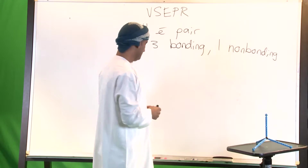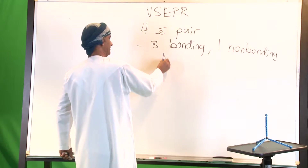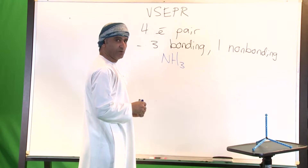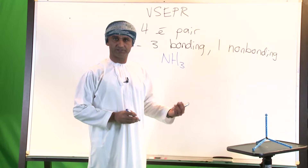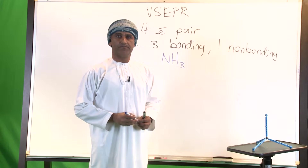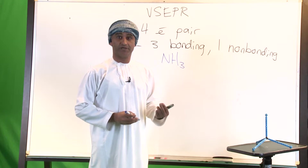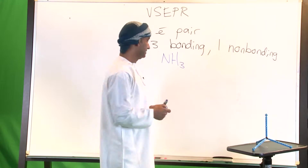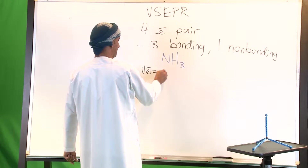A typical example in this case would be ammonia, NH₃, where nitrogen makes three bonds with the surrounding hydrogen atoms. In order to draw a possible Lewis structure, we need first to calculate the total number of valence electrons.